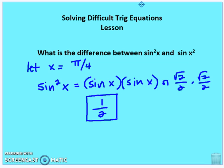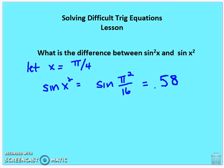If we evaluate at pi fourths, sine of pi fourths is root 2 over 2, and root 2 over 2 times root 2 over 2 is 1 half. Now if we evaluate the same value for sine x squared, we get sine of pi squared over 16, which is approximately 0.58 — not the same as 1 half. The mathematical requirements of sine x squared and sine squared x are both different, so please keep that in mind as we solve these trig equations.